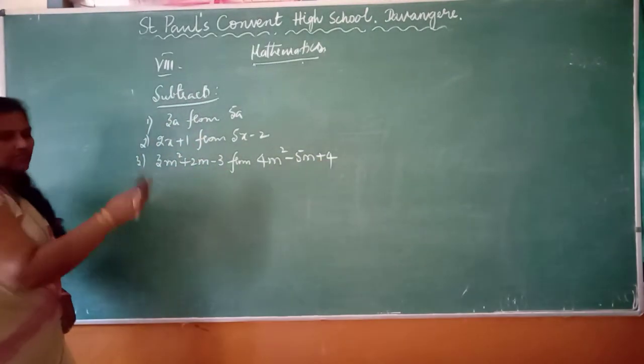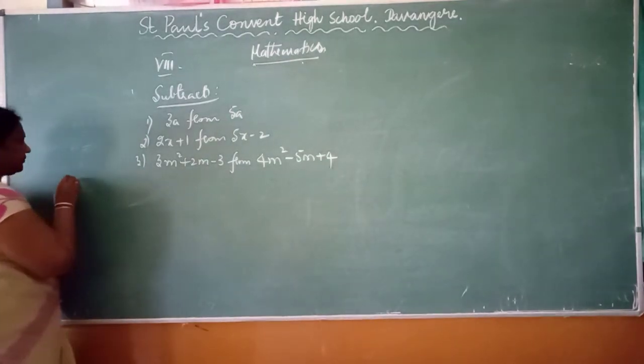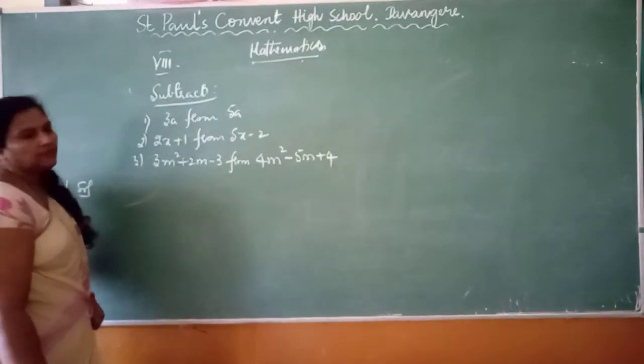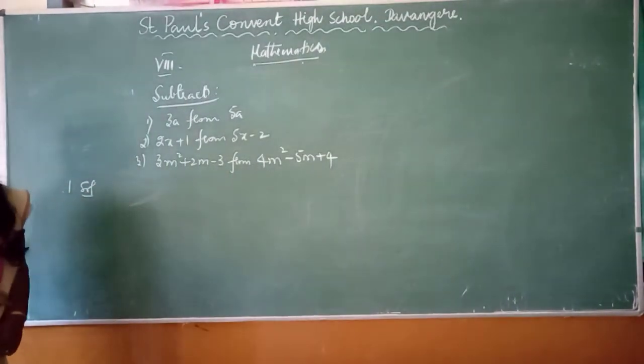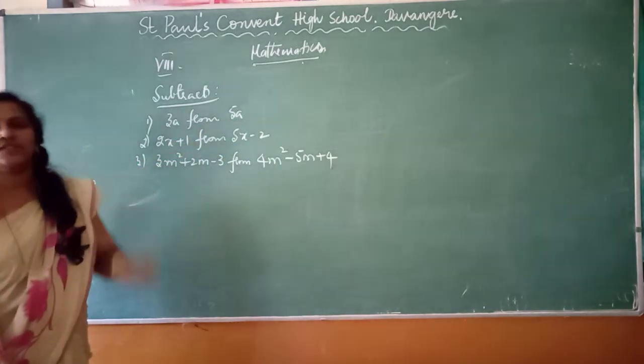I'll take these three examples. First one: subtract 3A from 5A. The first thing you have to do is always the 'from' should be written first.